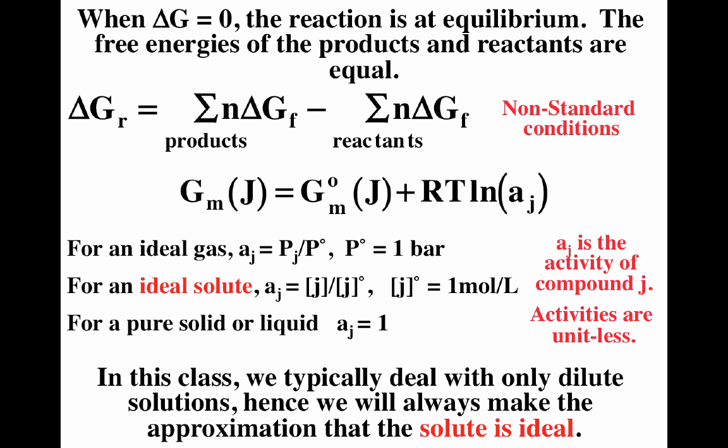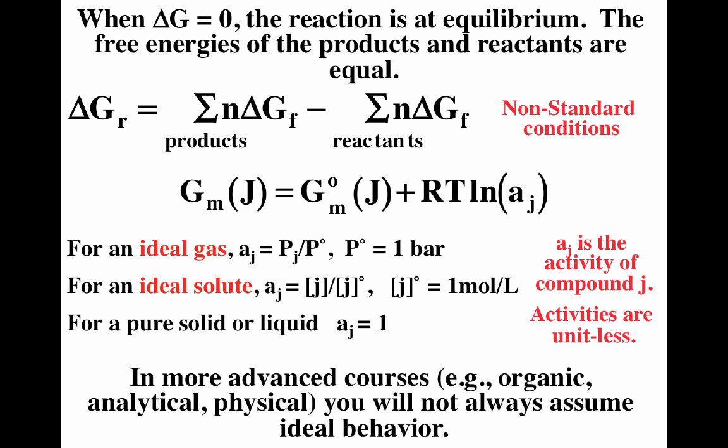For a solute, we assume ideal solution. For a gas, we assume ideal gas. The activity becomes the concentration divided by one mole per liter, again removing units, so activities are unitless. Pure solids and pure liquids have activities of one. In more advanced courses like organic, analytical, or physical chemistry, you probably will not make these assumptions. But in general chemistry: ideal gas activity equals partial pressure (unitless), ideal solute activity equals concentration (unitless), and pure solid or pure liquid activity equals one.